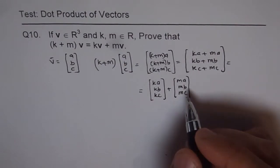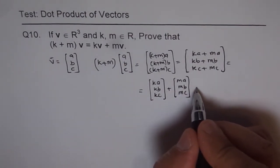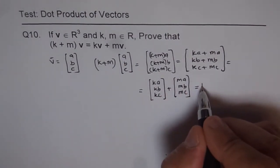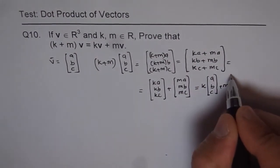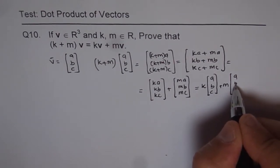Now, so that means this is equal to, we can write this as k, we can take k common, and then we get (a, b, c) plus m(a, b, c), correct?